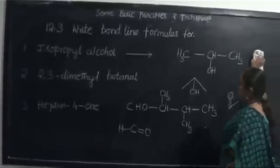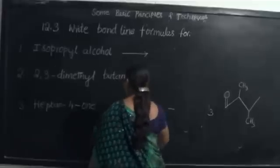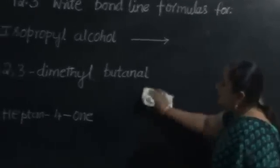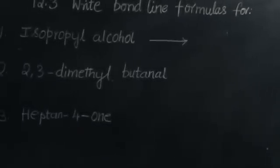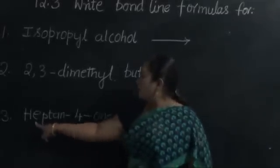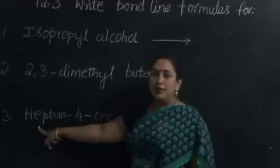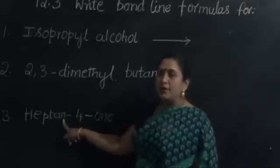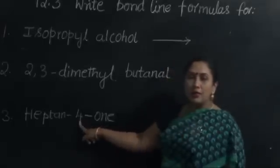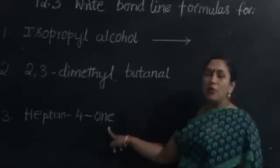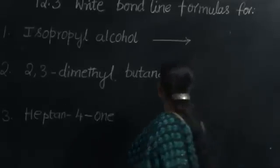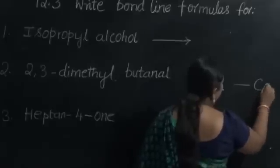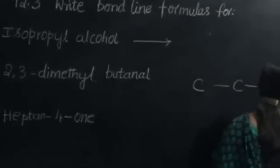Now let us look at question number 3. We need to write the bond-line formula for heptan-4-one. 'Hept' is the root word, meaning this organic compound contains 7 carbon atoms, and it is saturated. In the fourth carbon atom position, there is presence of a ketone functional group, indicated by '-one'. Let us write the carbon chain containing 7 carbon atoms.